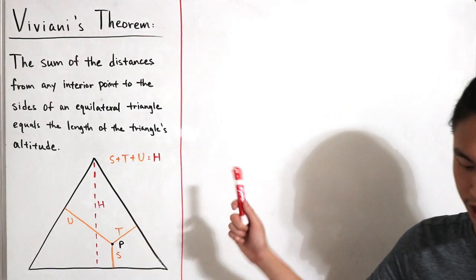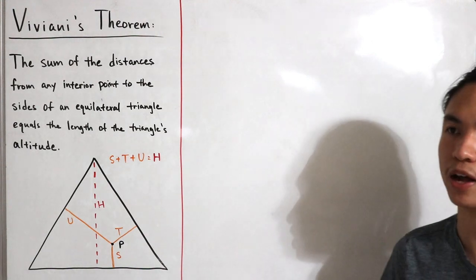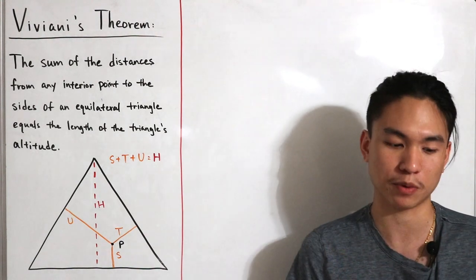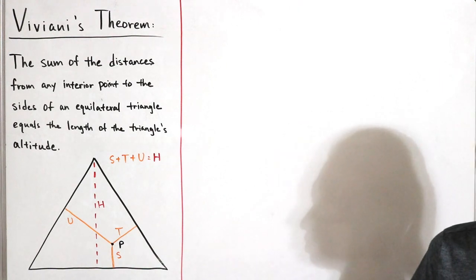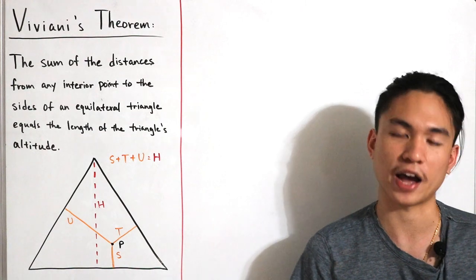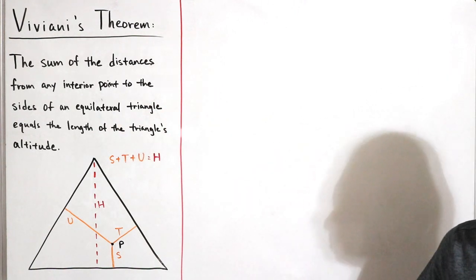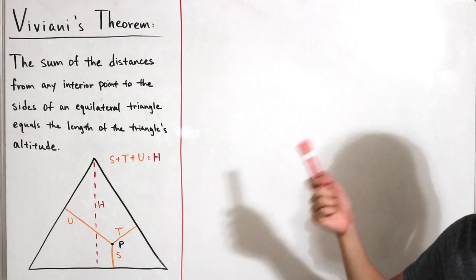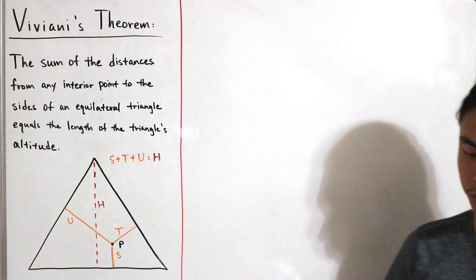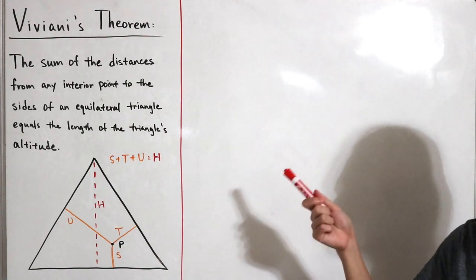This theorem has real applications. If we extend the idea using lines parallel to the sides of the equilateral triangle, it gives coordinates for ternary plots — for example, flammability diagrams showing control of flammability in mixtures of fuel, oxygen, and inert gas such as nitrogen. Also, the converse holds: if the sum of distances from an interior point to the sides is independent of the point's location, then the triangle is equilateral. The theorem also generalizes to give coordinates on a regular simplex.